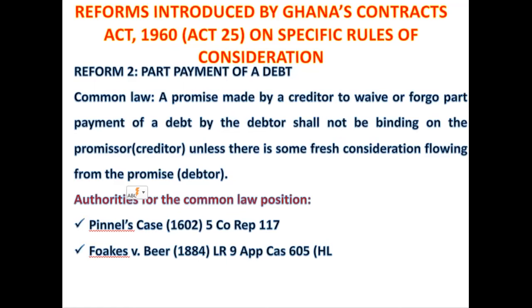Now I shall read out the facts of this case and highlight how it relates to this particular principle. The brief facts are that the plaintiff was someone to whom the defendant was indebted in an amount of about 2,090 pounds. This indebtedness arose when the plaintiff sued the defendant in the High Court and obtained judgment against the defendant for this amount of 2,090 pounds together with interest.